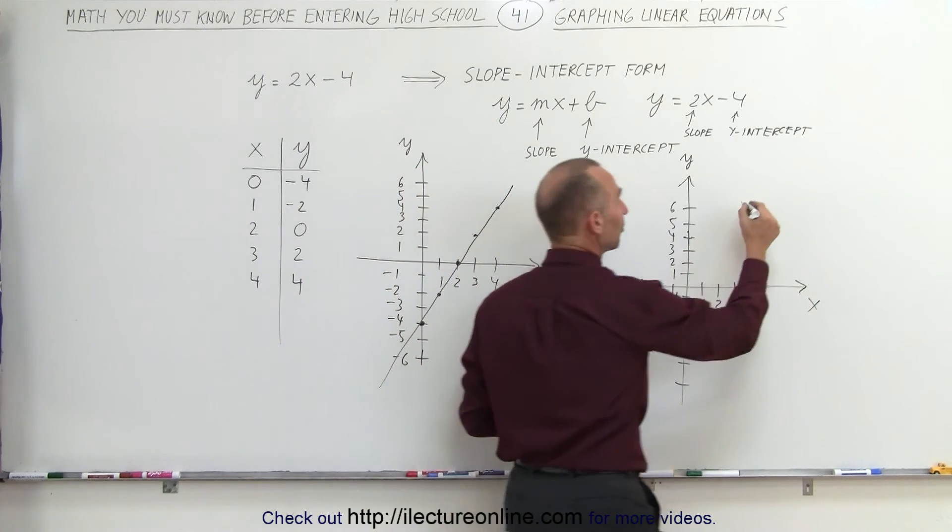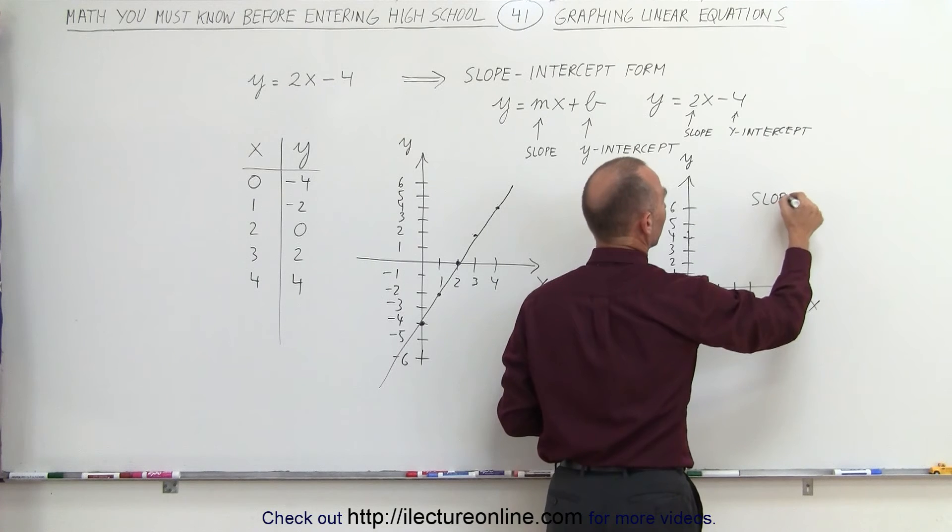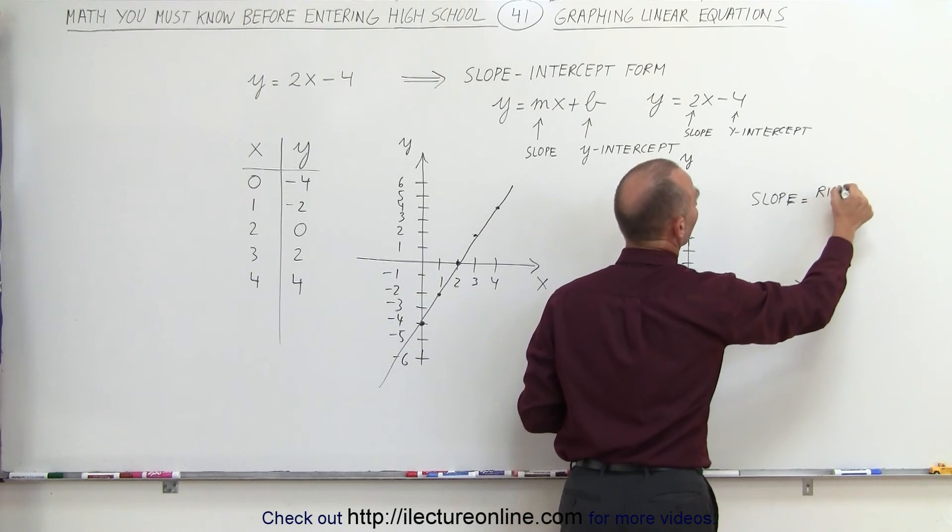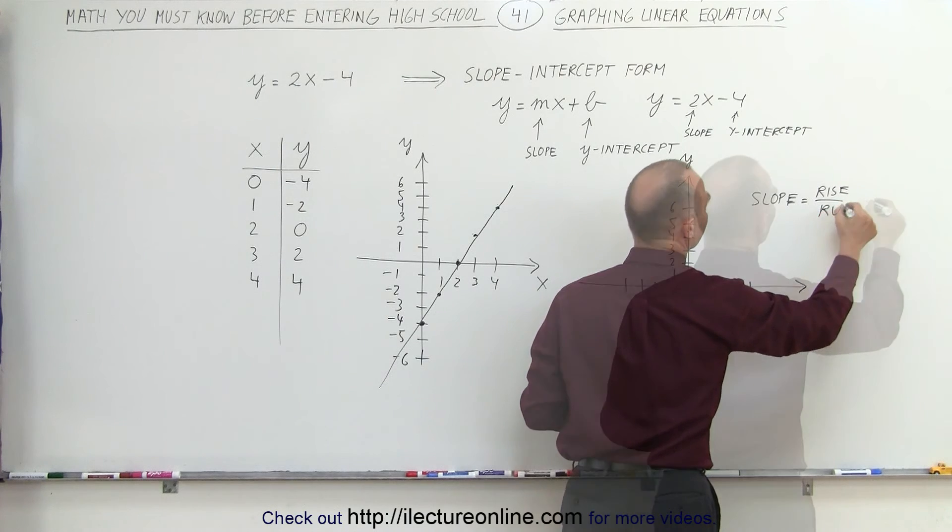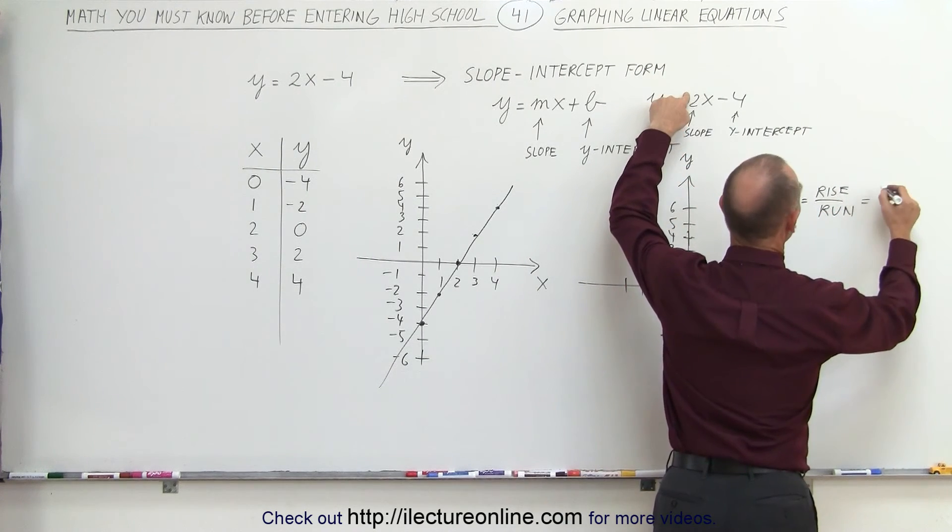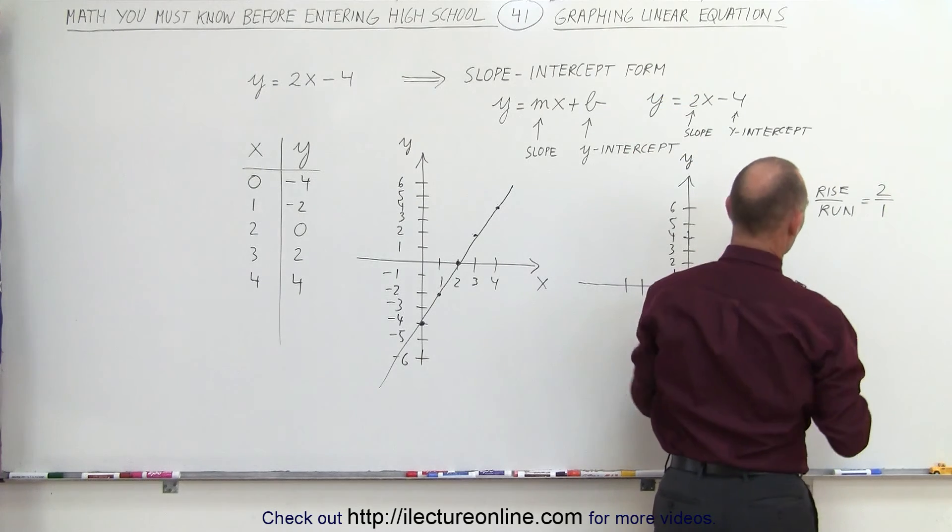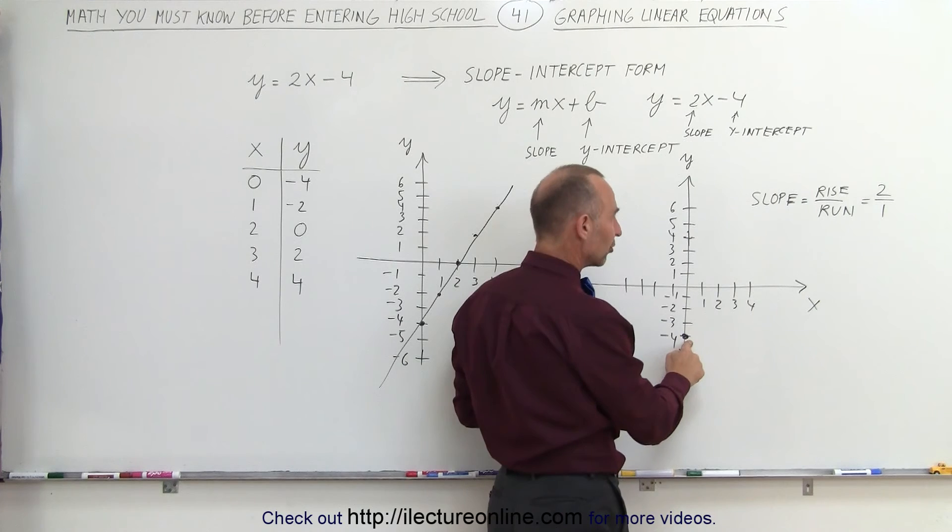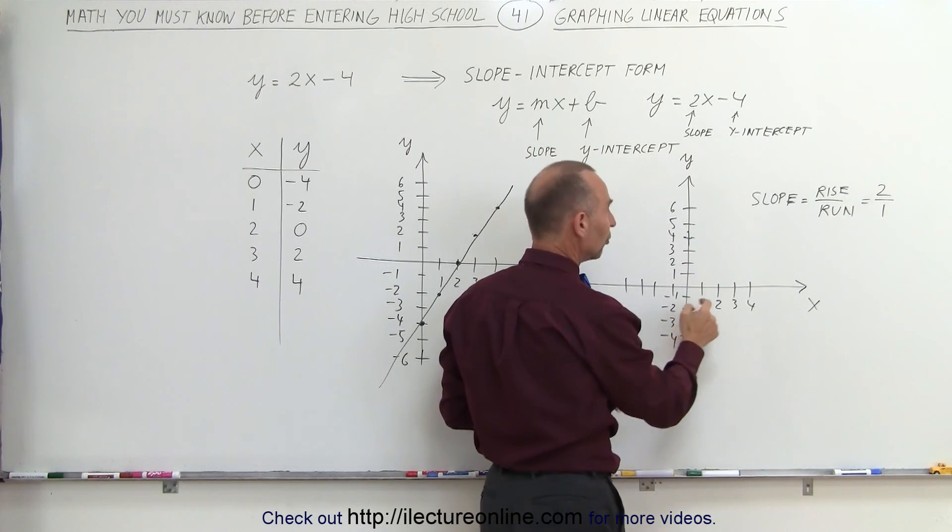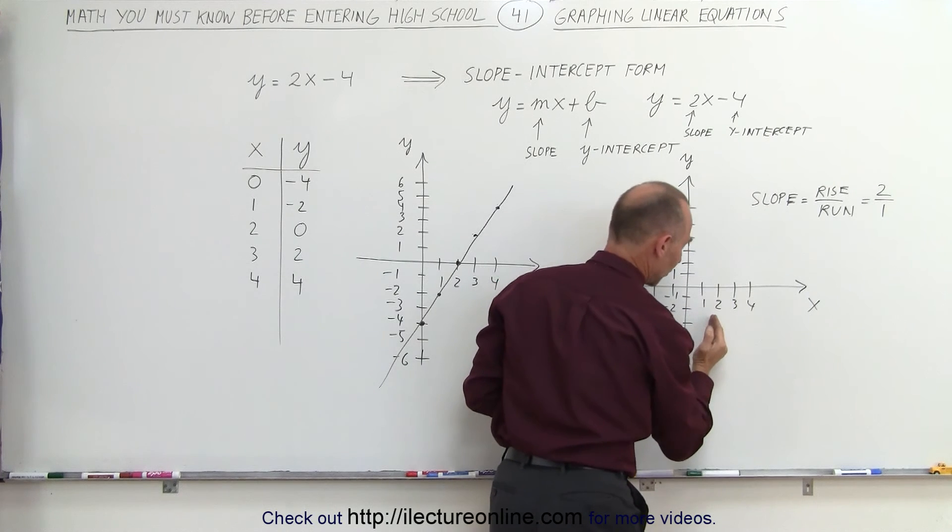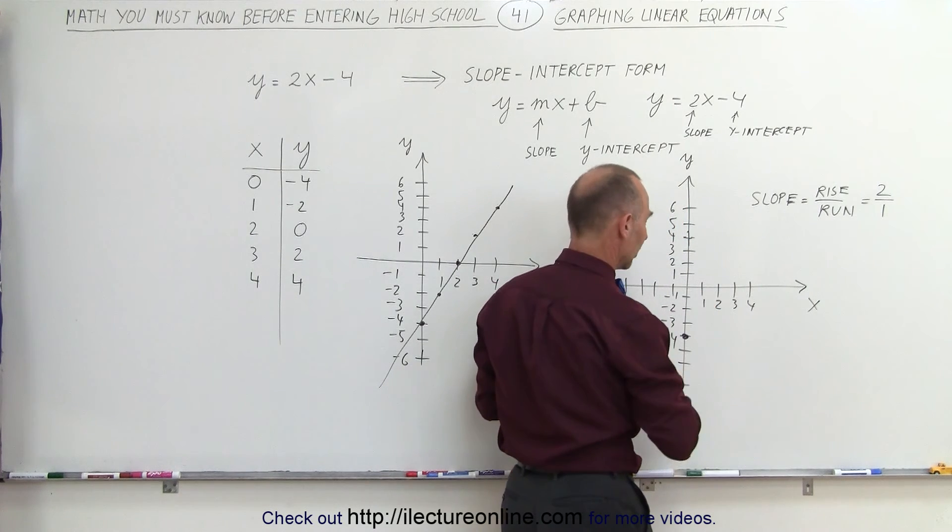Now the slope by definition is equal to the rise divided by the run. In this case, the slope rise over run is 2 divided by 1. Starting from the place where it crosses the y-intercept, if I go up two units, because that's what we mean by the rise, and then run one unit, meaning go to the right by one unit, I find another point on the line. The rise is 2 and the run is 1.